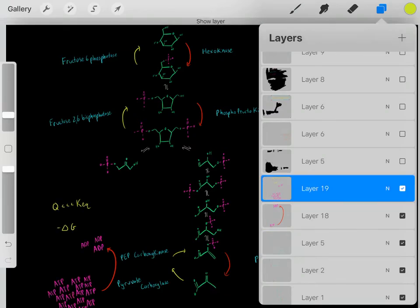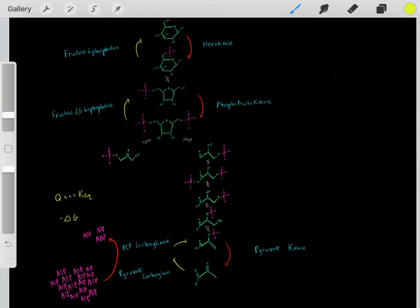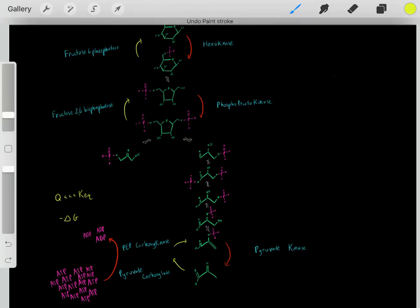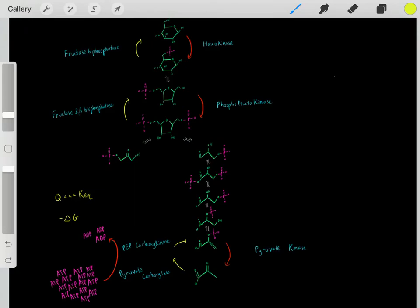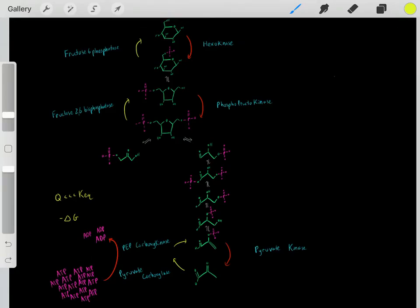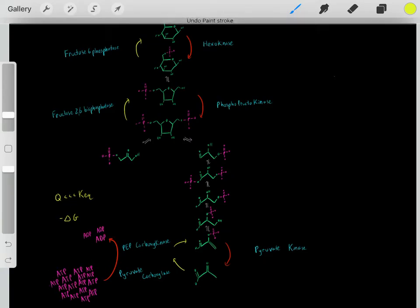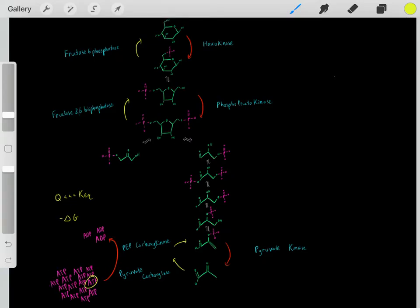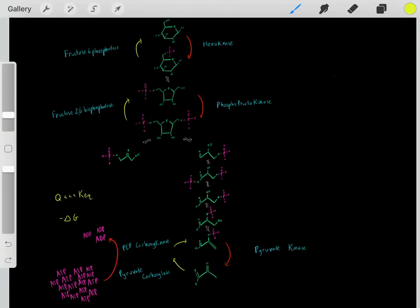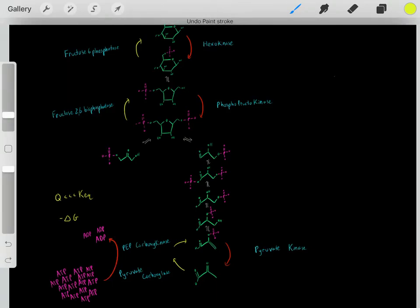The cell at all times has huge concentrations of ATP and very small concentrations of ADP—these are not equilibrium concentrations. So when we take ATP and hydrolyze it into ADP, we're going toward equilibrium, which is very thermodynamically favorable.